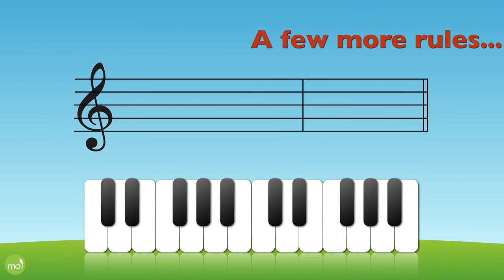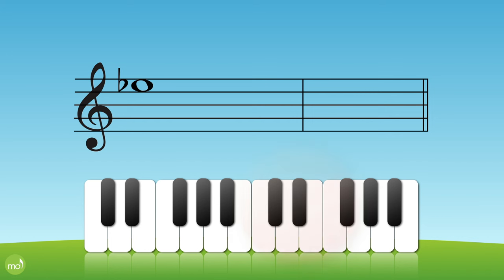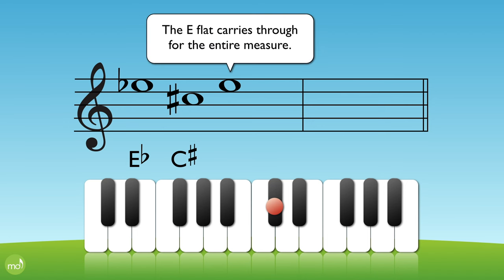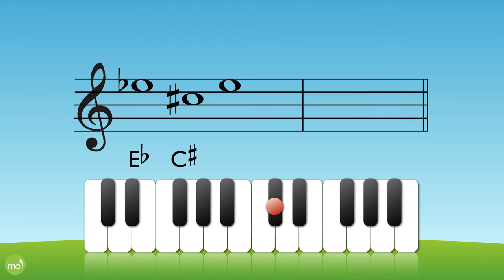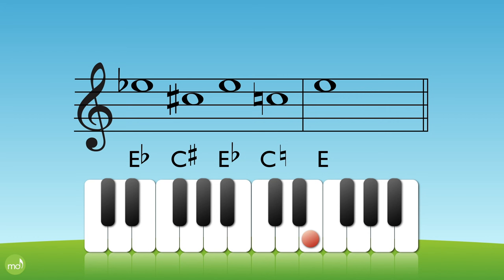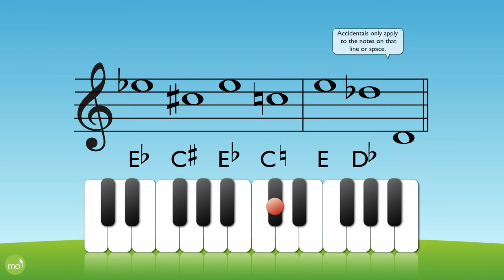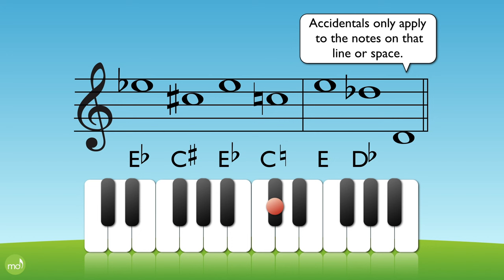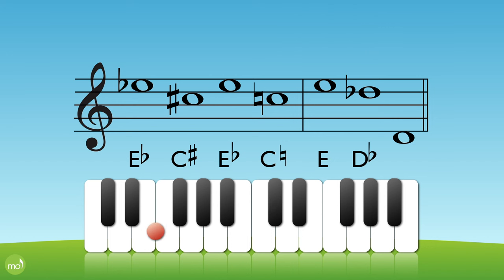Let's practice a little bit more and learn a few more rules. Here's an E flat, and this is C sharp. Now the E flat carries through for the entire measure, so this note is still E flat. And the C sharp has been canceled by a C natural. Bar lines can cancel accidentals too, so this next note is just E. And then D flat. Accidentals only apply to the notes on that line or space, so the last note is just a D, not a D flat.